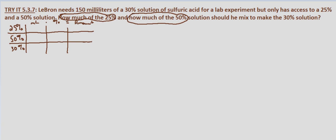Let x equal the amount of the 25% solution and y equal the amount of the 50% solution. We know the 30% solution he wants is 150 mL. We convert the percentages to decimals: 0.25 for the 25% solution and 0.5 for the 50% solution. We multiply the number of mL times the concentration, giving us 0.25x and 0.5y. For the overall solution we have 0.3, so 150 mL times 0.3 equals 45.